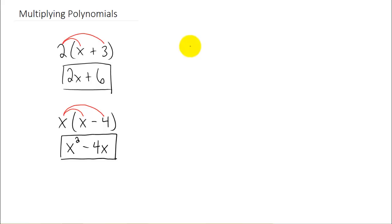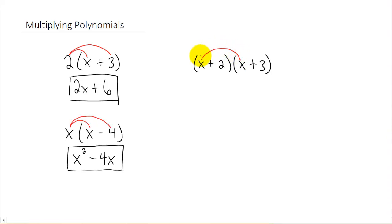Okay, let's do a more complicated example. Now we're multiplying a binomial times another binomial. And the way that you do this is you multiply the first term in the first binomial through the parenthesis. That's going to give you x times x is x squared, x times 3 is 3x. And then we're going to take the second term in the first binomial and we're going to distribute that through the parenthesis as well. And we're going to add it all together.